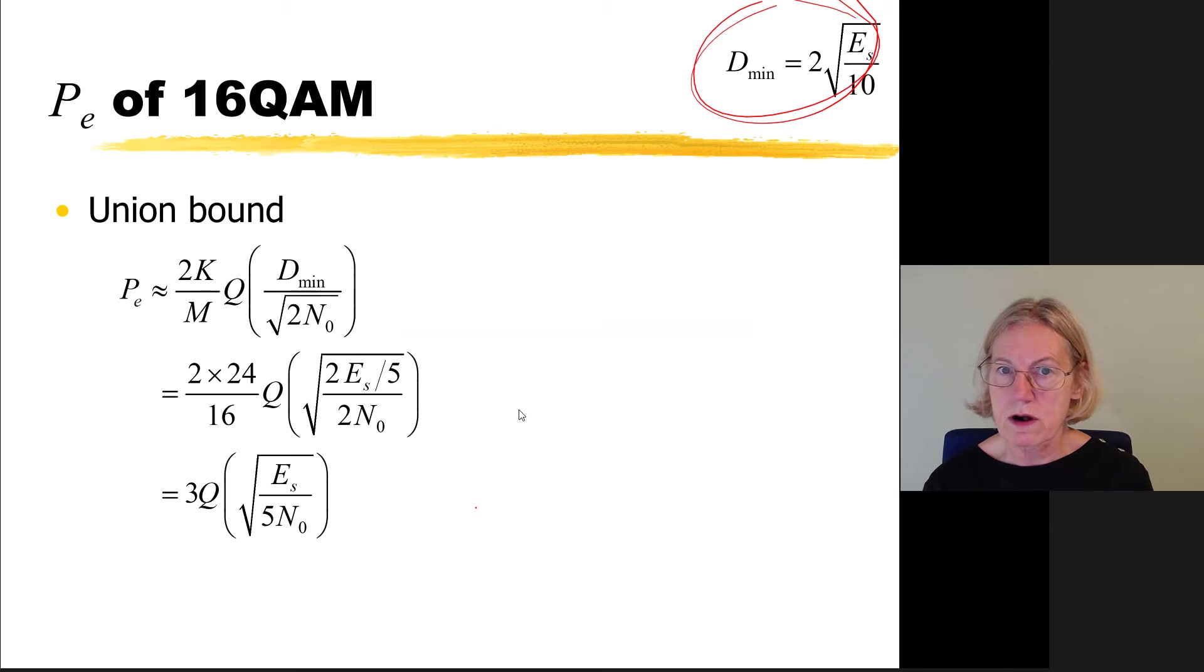So now I am ready to go into the union bound. I know that K is equal to 24, M is equal to 16, and the dmin I found by the correct normalization. So substituting these numbers in, I come up with an expression for the probability of error for 16-QAM, which is 3 times Q of the square root of Es. This is the energy per symbol over 5N0. And of course, I could write that in terms of Eb, and then I have Eb over N0 here as one of the terms.